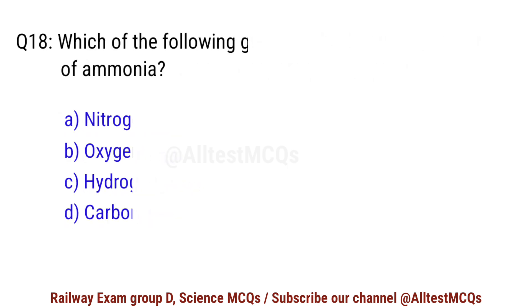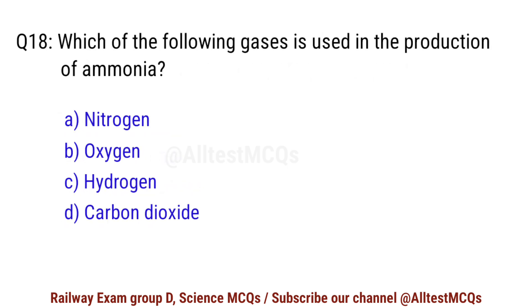Question No. 18. Which of the following gases is used in the production of ammonia? Right option is C. Hydrogen.